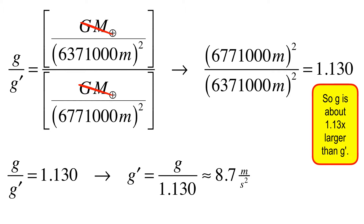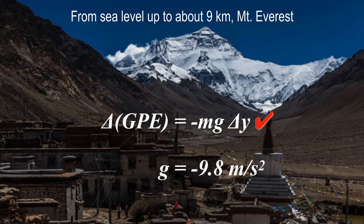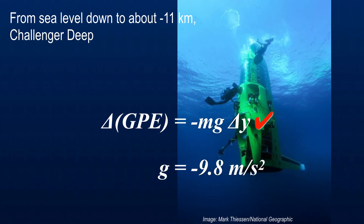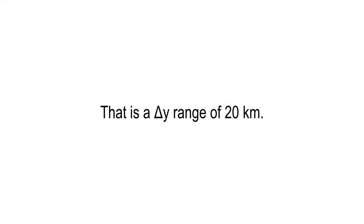Let's review. From sea level up to about nine kilometers, delta GPE = -MG·delta-Y works perfectly with g = -9.8 m/s². It works all the way down to the bottom of the Marianas Trench — a delta-Y range of about 20 kilometers total (about 9 km above and 11 km below sea level). We're going to use that 20-kilometer distance range in some of our diagrams.